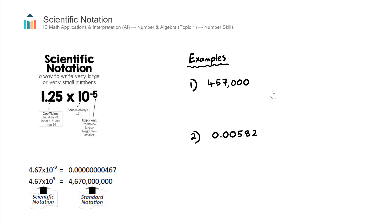Let's work through these two examples. The first is a large number and the second is a small number. This first number, 457,000, is currently in standard form, and I'm going to convert that into scientific notation. Currently the decimal point is here on the right, whenever it's a whole number.